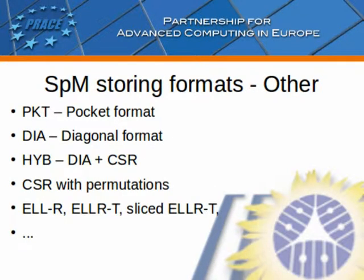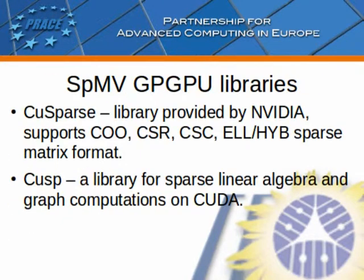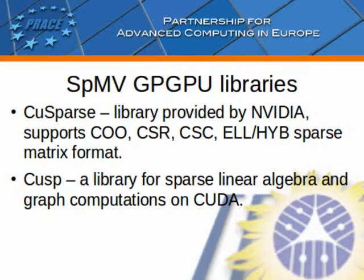Many other storing formats have been developed, to mention just a few. The most popular library used as a benchmark for our own implementations is the cuSPARSE library, provided by NVIDIA. It supports COO, CSR, CSC, ELL, and hybrid sparse matrix formats. An open source alternative is the CUSP library, which provides sparse linear algebra and graph computations on CUDA-enabled GPGPUs.